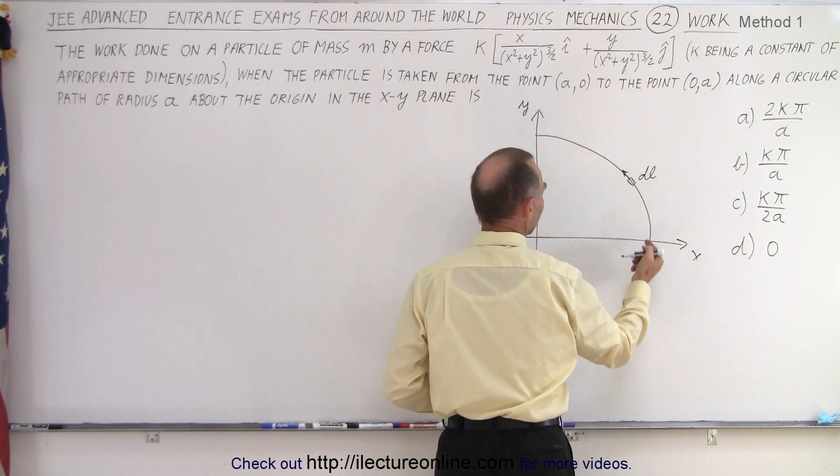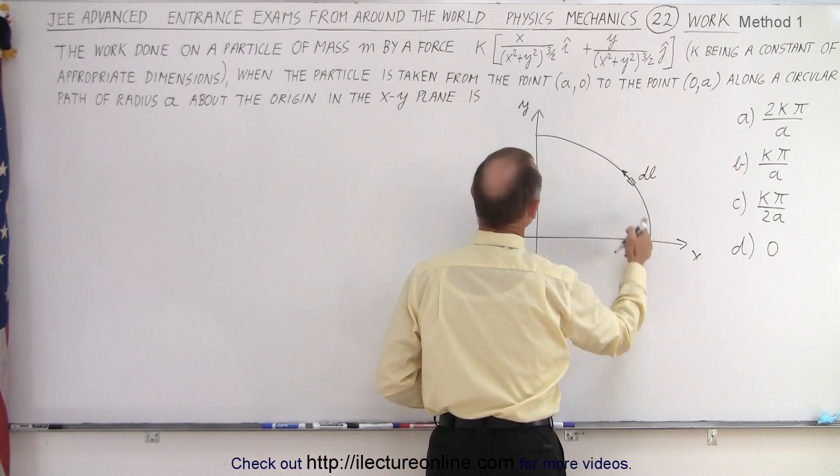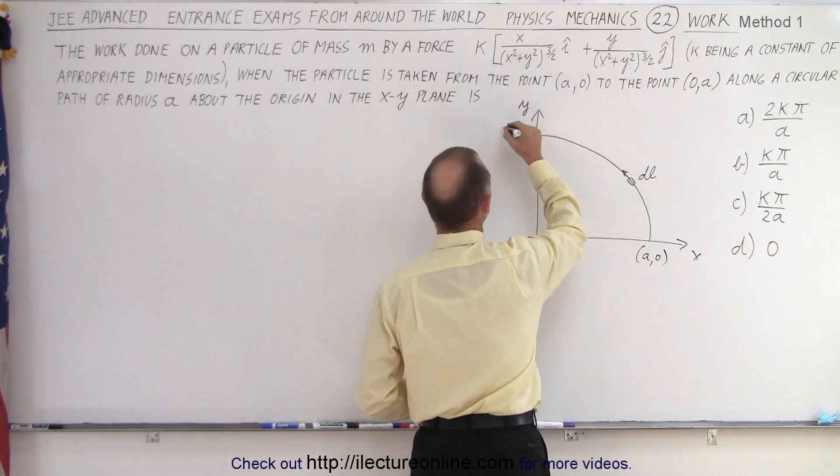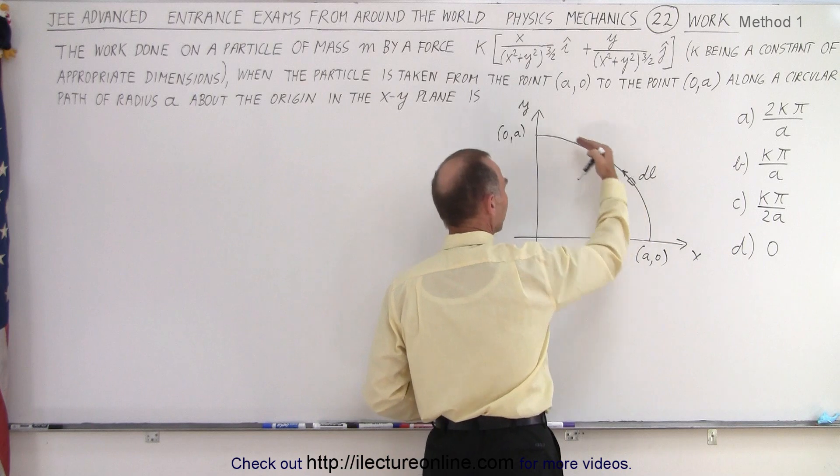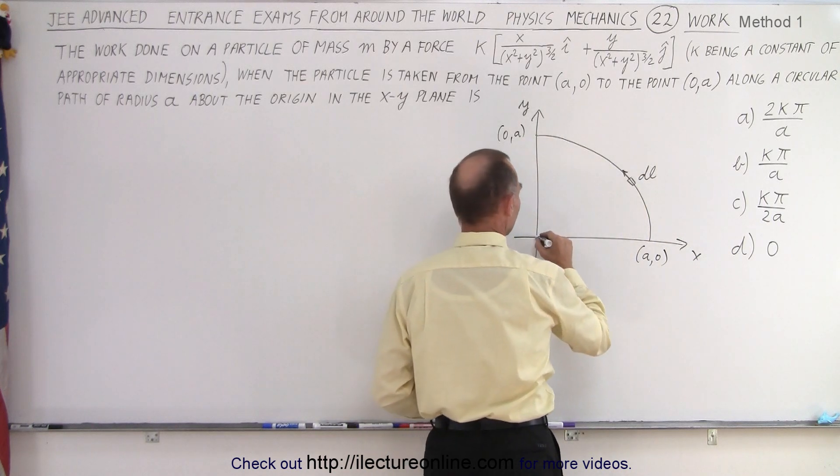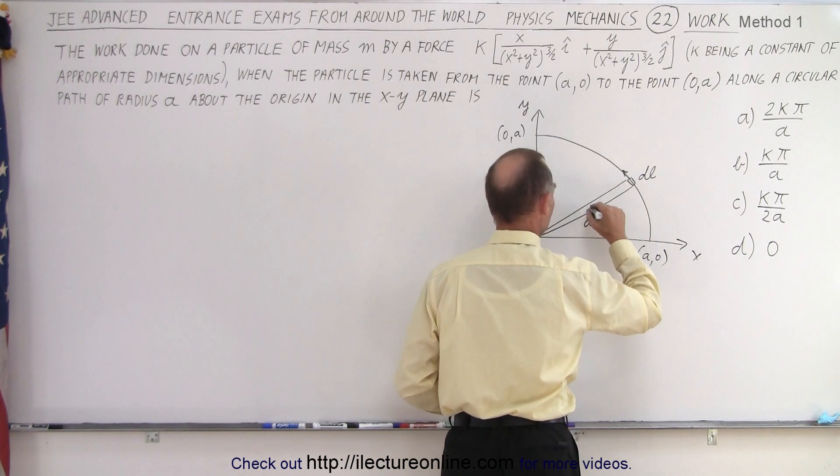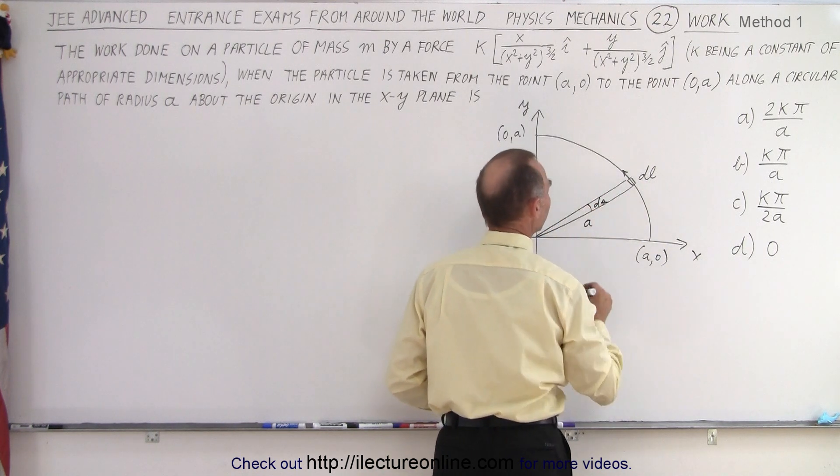Of course, we're going to integrate it from A0 to 0A. So we start at A0 and we go to 0A. We're integrating along this path. And if this is radius A and this small angle is d theta,